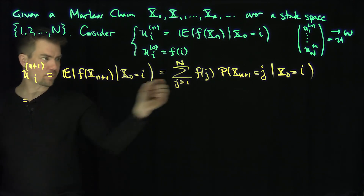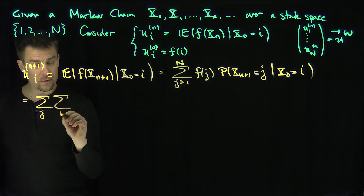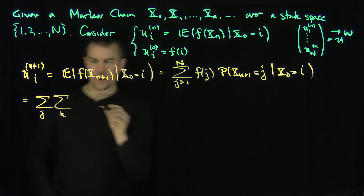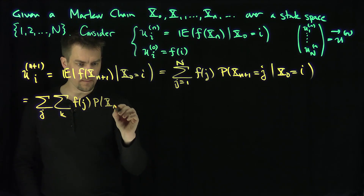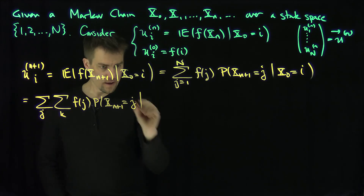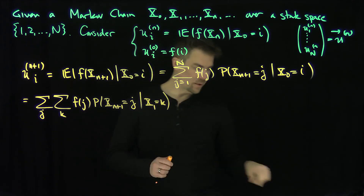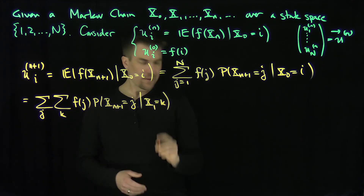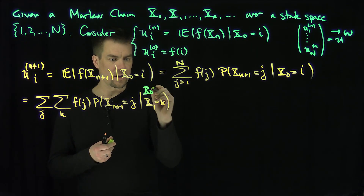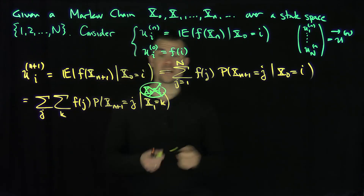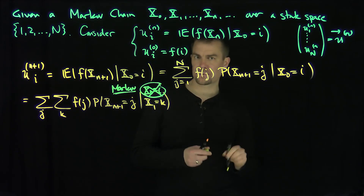Now I'm going to condition on x1 being equal to k. So this is going to be the sum over j and the sum over k from 1 to n, of f(j) times the probability that x_{n+1} is equal to j, given that x1 is equal to k — and also x0 is equal to i. But that information is no longer needed because it's a Markov process. That's the Markov property.